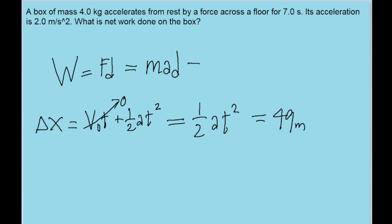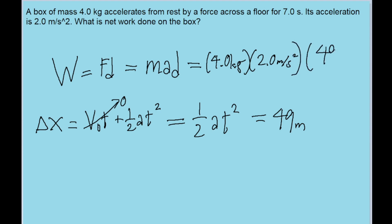So now we just put these values into the equation for work. The mass is 4.0 kilograms, the acceleration is 2.0 meters per second squared, and the distance is 49 meters. If we put this into our calculator, we find a net work of about 930 joules. This is how much work is done on the box.